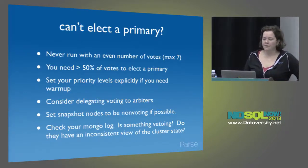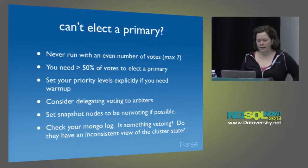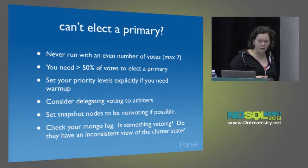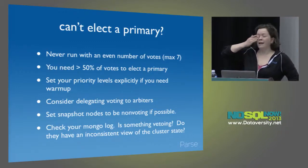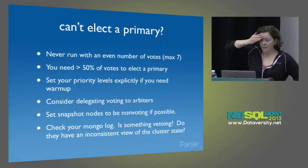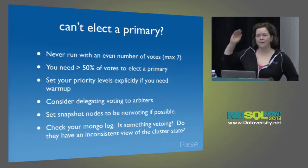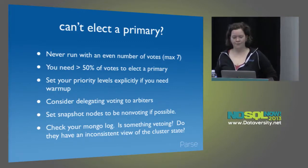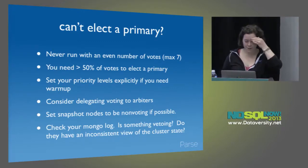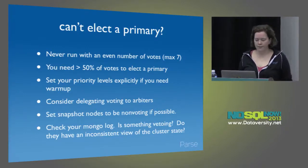If all else fails and you're not electing a primary, tail your MongoDB log and look for RSSync and see if something is vetoing. A confusing and annoying thing is that nodes can veto even if you've taken away their votes. So you may actually have to stop the mongod process if something has an inconsistent view of the cluster state. And remember, even under normal circumstances it can take a minute to elect a new primary — so keep calm.